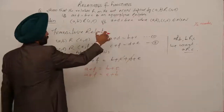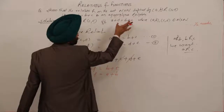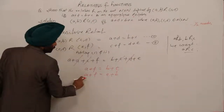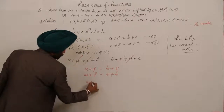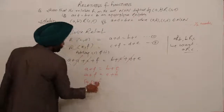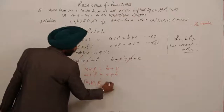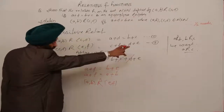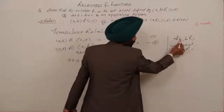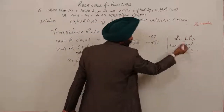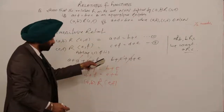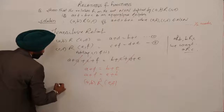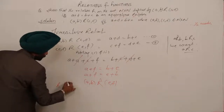Moving directly back to the question format — a+d = b+c is only possible when this relation holds — so (a,b) R (e,f). Therefore our relation is transitive.